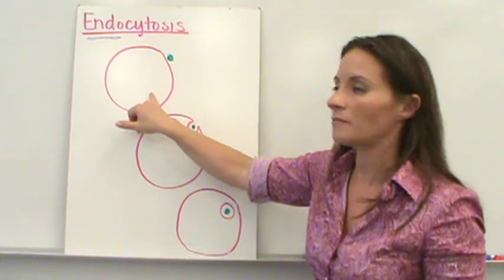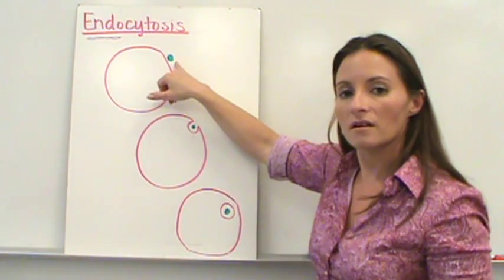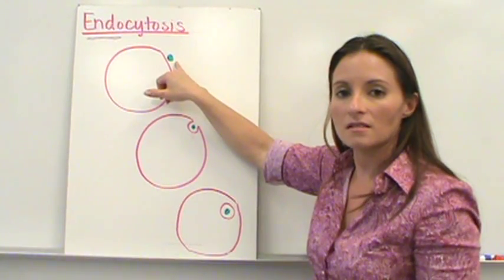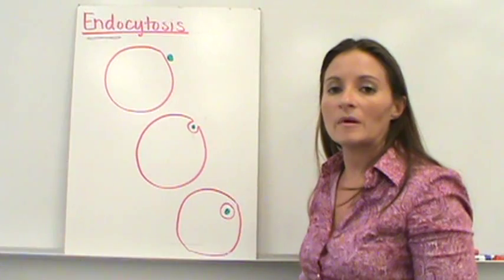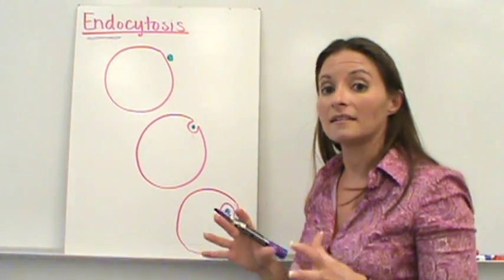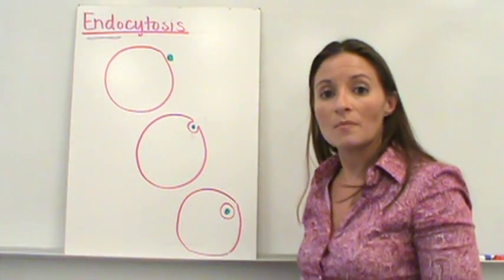Our cell membrane here is in pink and we have this blue particle here that wants to move to the inside of the cell. It hits the outside of the cell membrane and the cell membrane says, hey, we need that. This cell needs that particle.